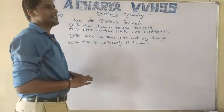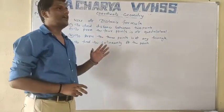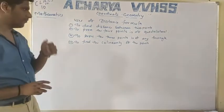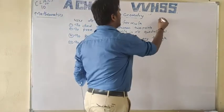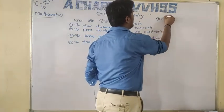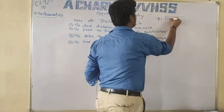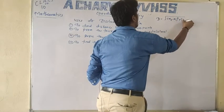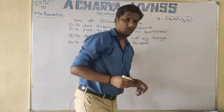Good morning students. In the last lecture, we have studied the distance formula. The distance formula is that the distance between any two points D is equal to the square root of (x2 minus x1) whole square plus (y2 minus y1) whole square.